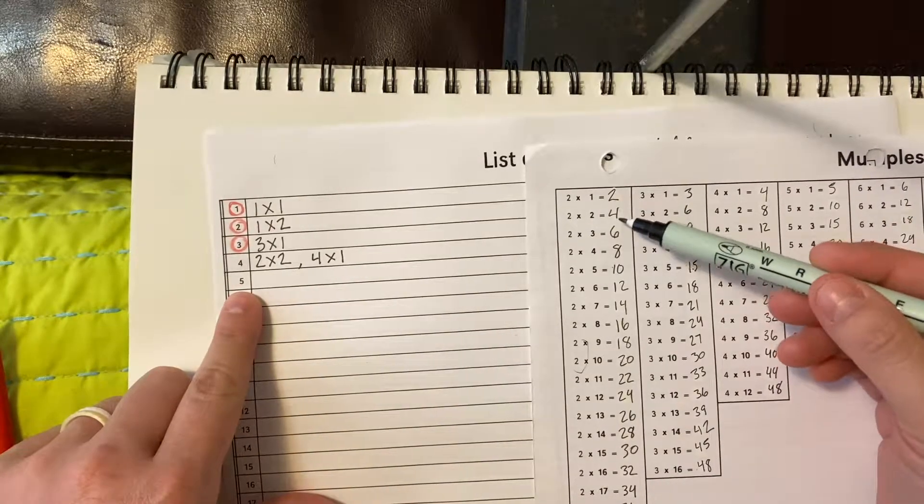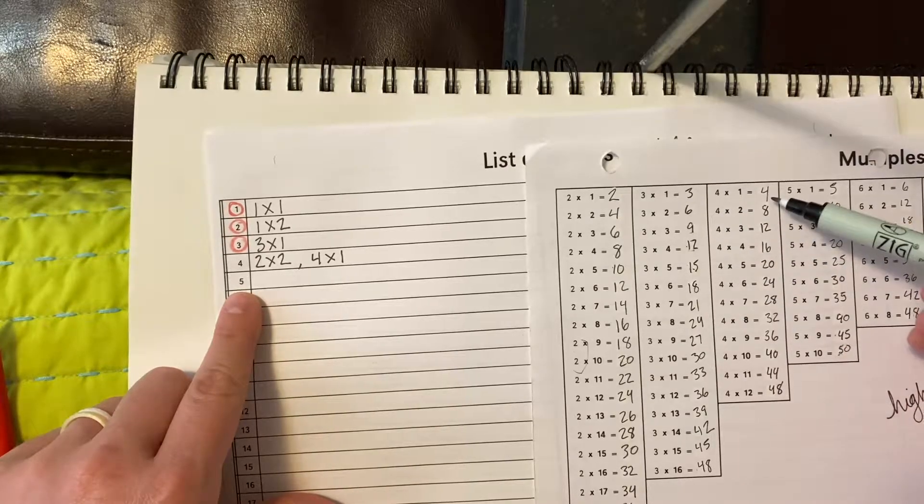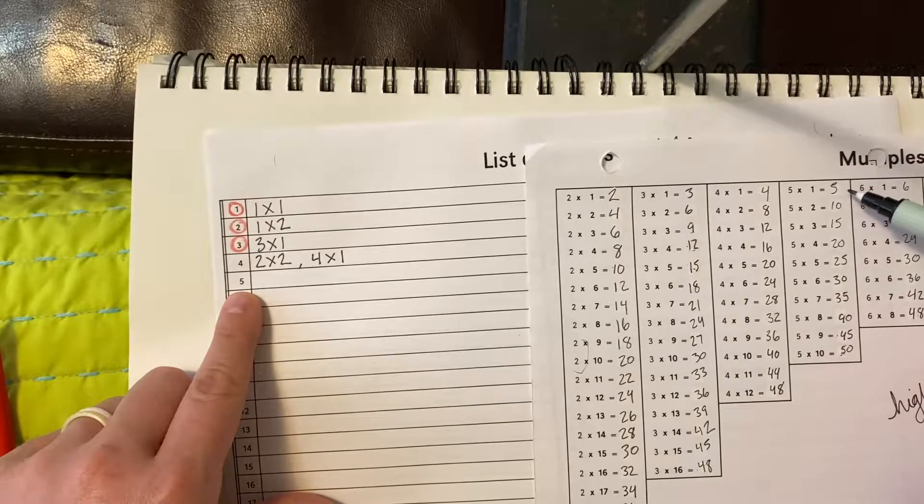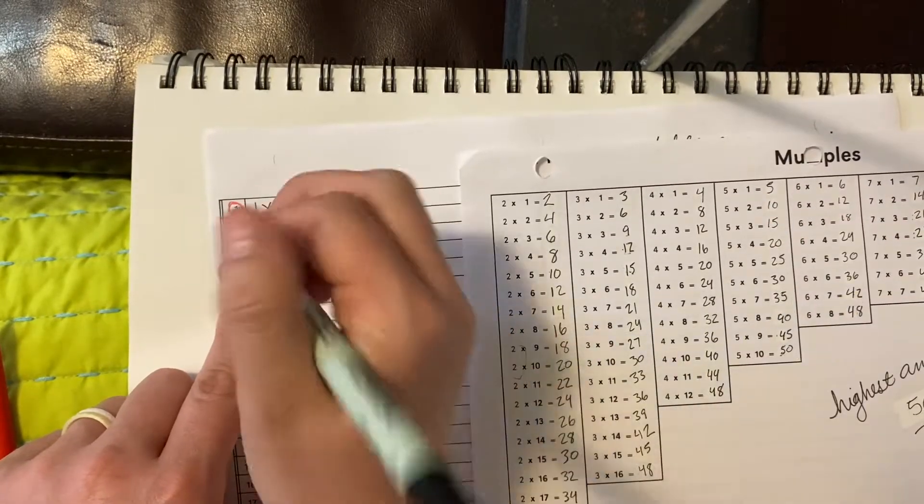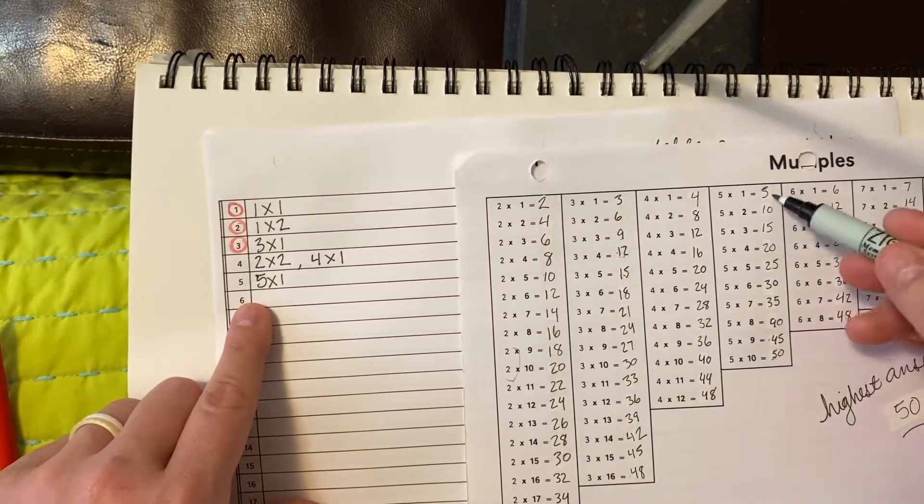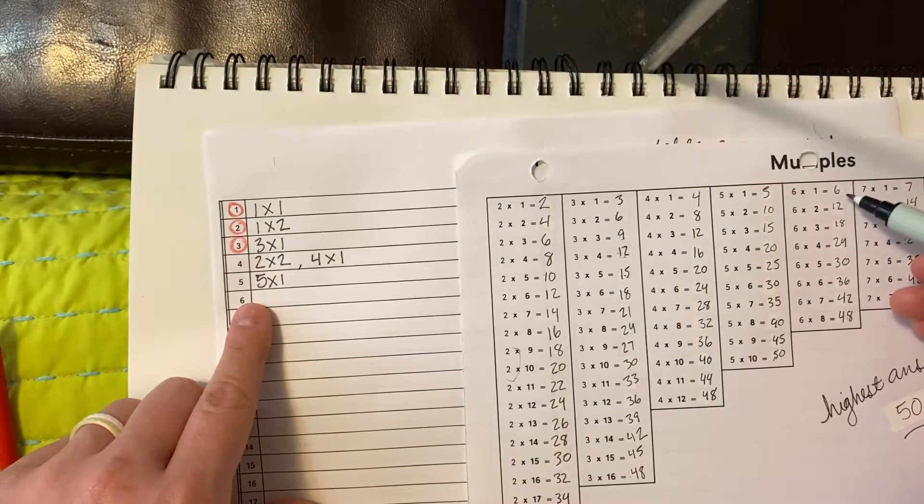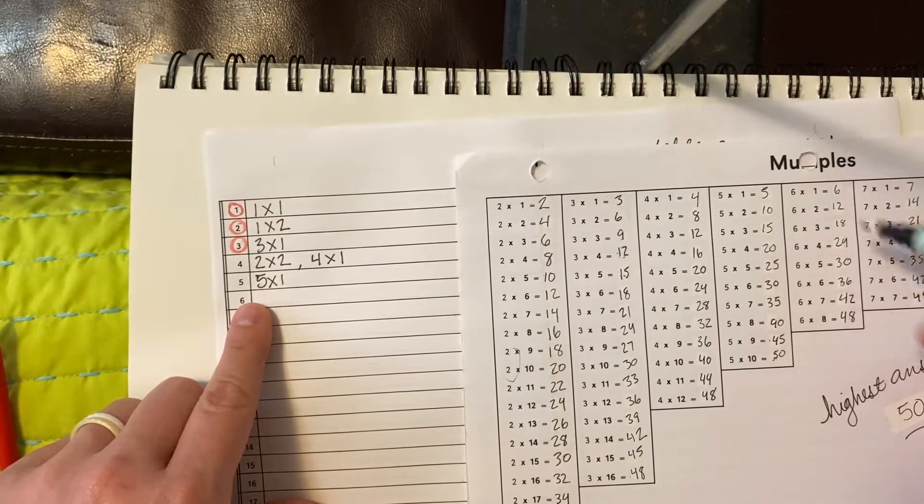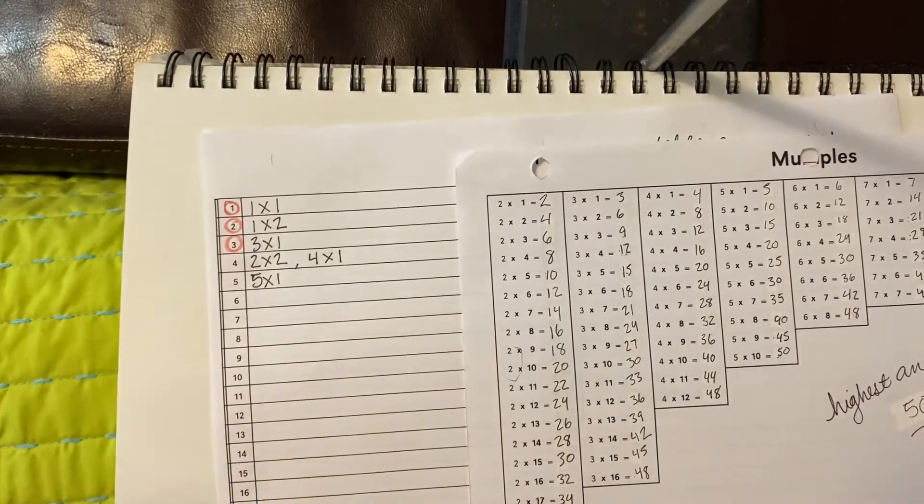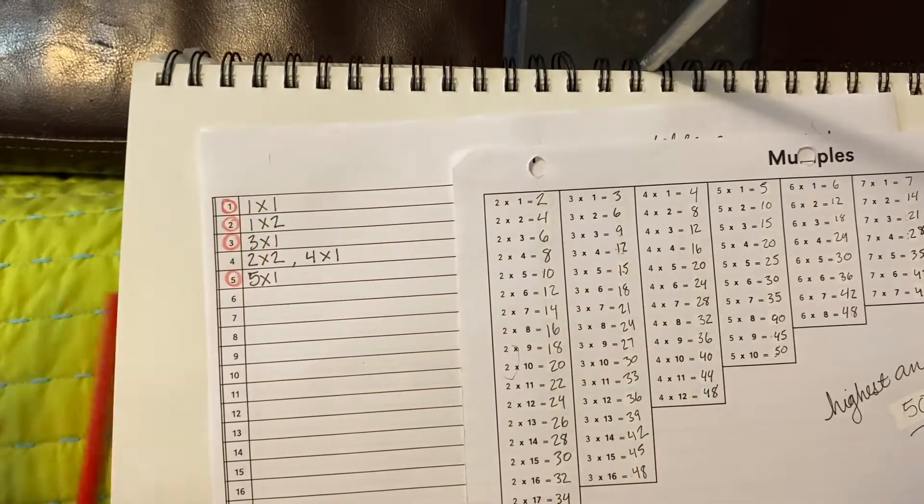5. So 2, 4, 6 - no 5s there. 3, 6, 9 - no 5s there. 4, 8, 12 - no 5s there. 5 - oh, there's 5: 5 times 1. 5, 10, 15 - no more 5s. 6 is the lowest number here, and 5 is lower than 6. So we know this is the only way.